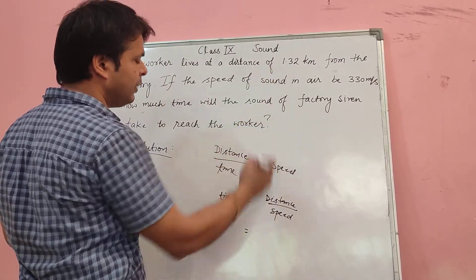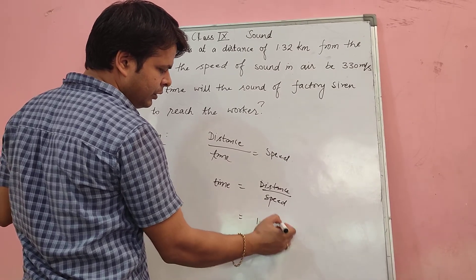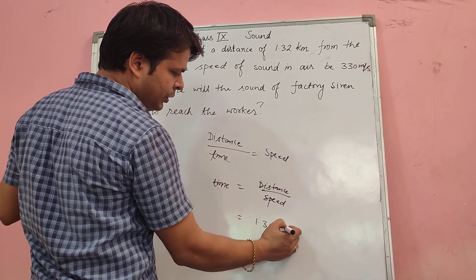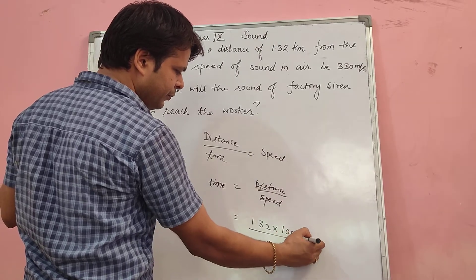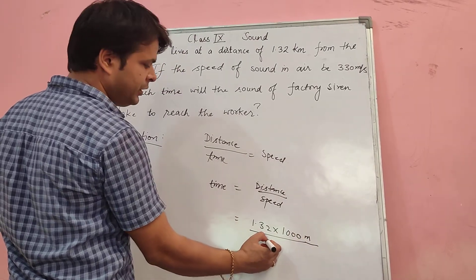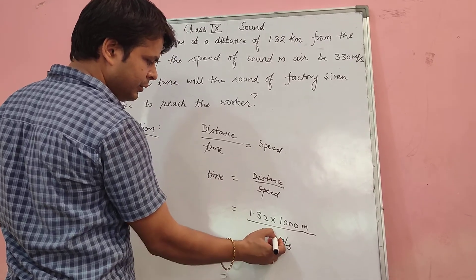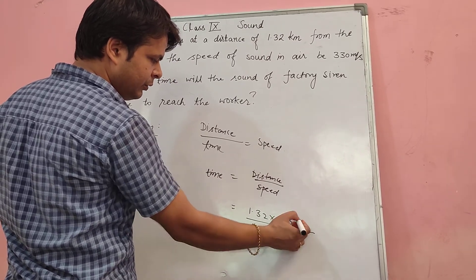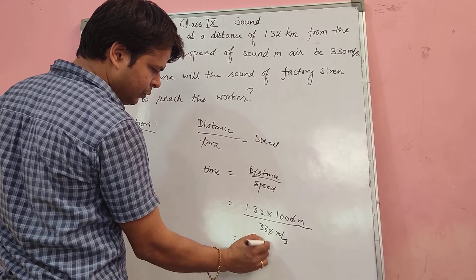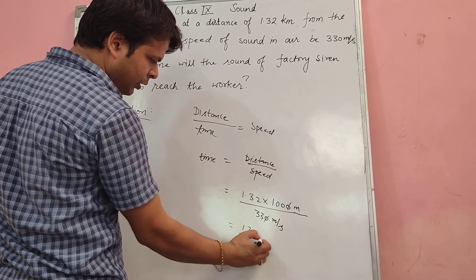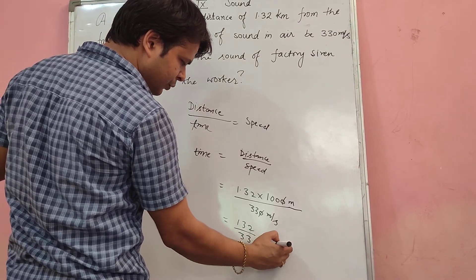The distance is 1.32 km. We convert km to meters: 1.32 × 1000 = 1320 meters. The speed is 330 meters per second. The zeros cancel, giving us 132 divided by 33, which equals 4 seconds.